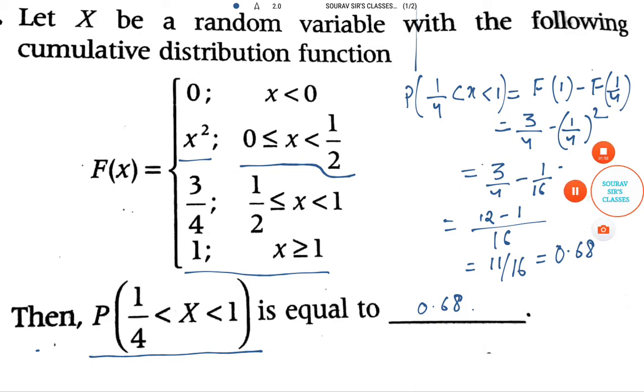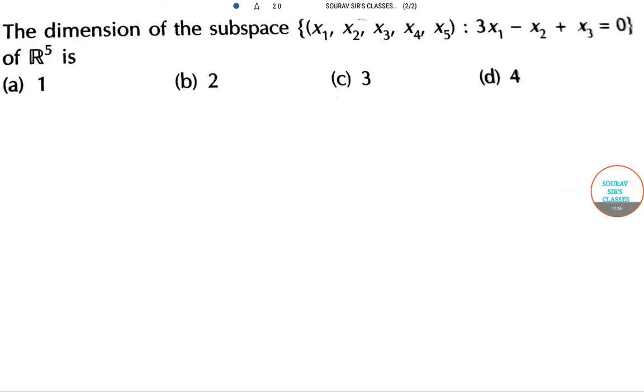Our next sum is based on dimension of the subspace {x1, x2, x3, x4, x5} such that it satisfies the equation 3x1 - x2 + x3 = 0. The options given are 1, 2, 3, and 4.